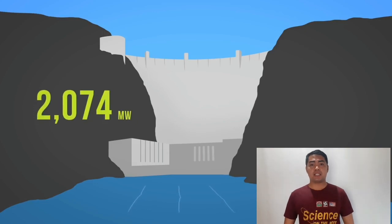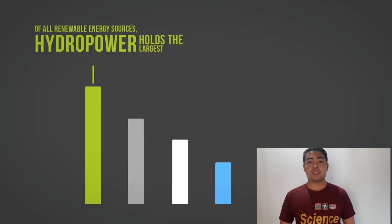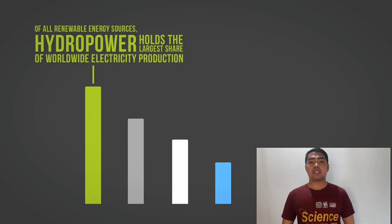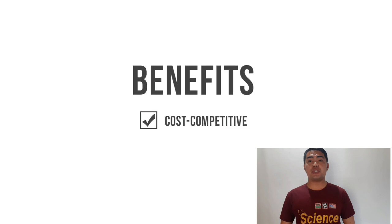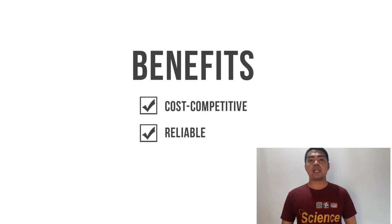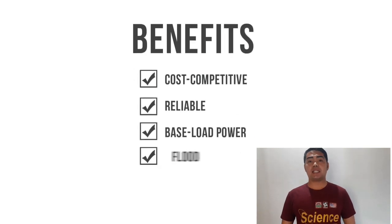Of all renewable energy resources, hydropower holds the largest share of worldwide electricity production. Hydropower has several benefits. Number one, it is a cost-competitive form of energy even though initial building costs are high. It's quite reliable compared to other renewable options and pairs well with other sources as it can be used as baseload power. In some cases, dam reservoirs can also help with flood control and be a reliable water supply for communities.